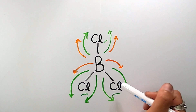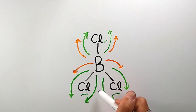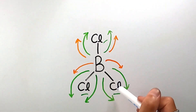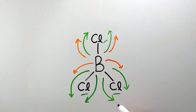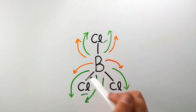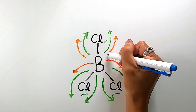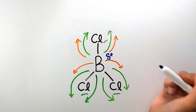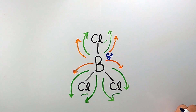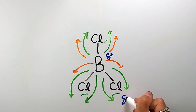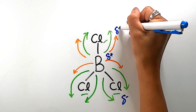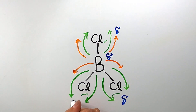Because electron cloud density is being shifted toward the more electronegative atoms, the chlorines, and away from the boron in the center, the boron has a partially positive charge, and the chlorine atoms each have a partially negative charge. This is what creates polarity in molecules.